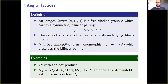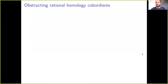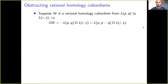In what follows, I want to first outline how Liska's argument works to obstruct rational homology cobordisms between lens spaces, and after that I will illustrate how I adapted his methodology. So if we want to obstruct the existence of a rational homology cobordism between lens spaces, suppose W is a rational homology cobordism from L(p,q) to L(r,s).